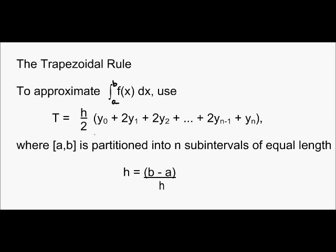T equals h divided by 2 times y sub 0 plus 2y sub 1 plus 2y sub 2 all the way up until you get to y sub n, where the interval [a,b] is partitioned into n subintervals of equal length. The subinterval width is h equals b minus a divided by n. So the length of the interval divided by the number of intervals that you want, that is what h is.